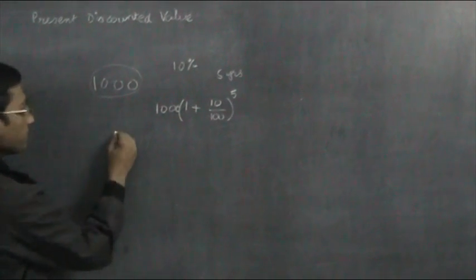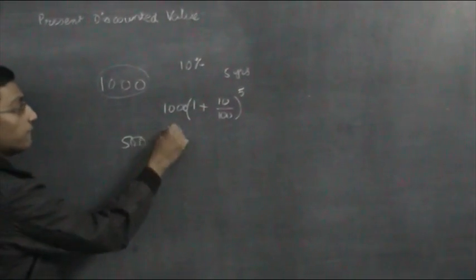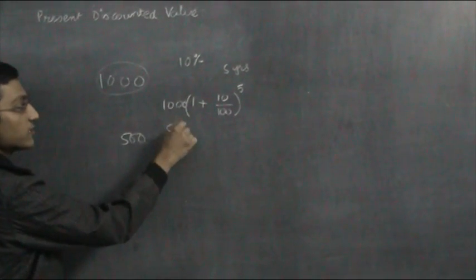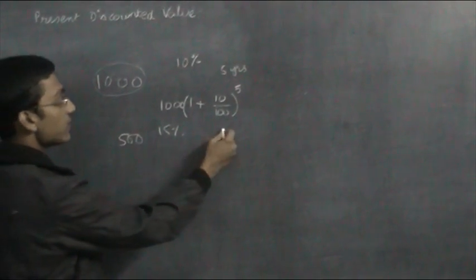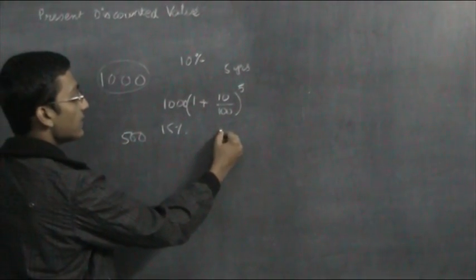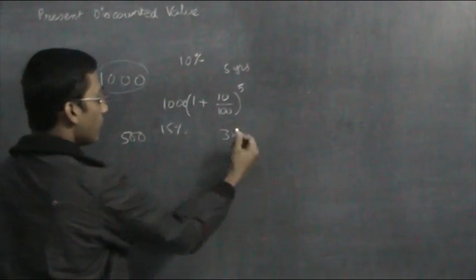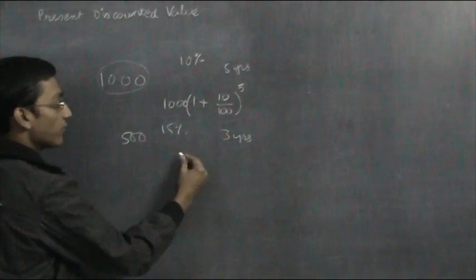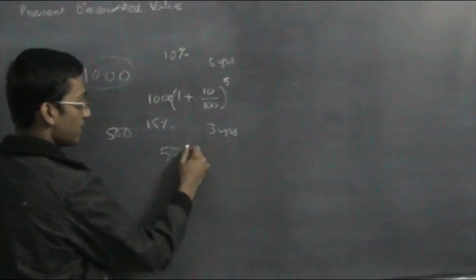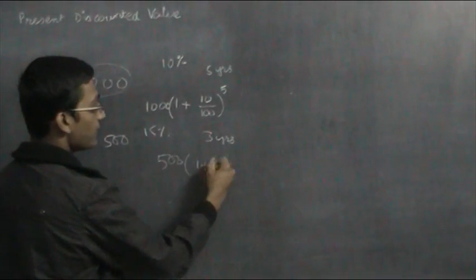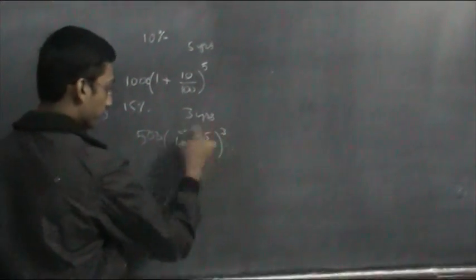Suppose I have 500 now, at a 15% interest rate for 3 years. What will it become after 3 years? It will be 500 × (1 + 15/100) to the power of 3.